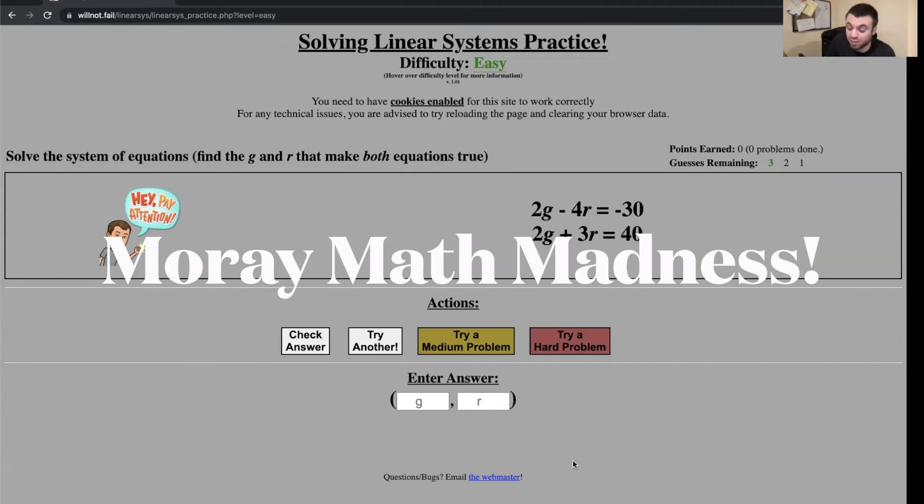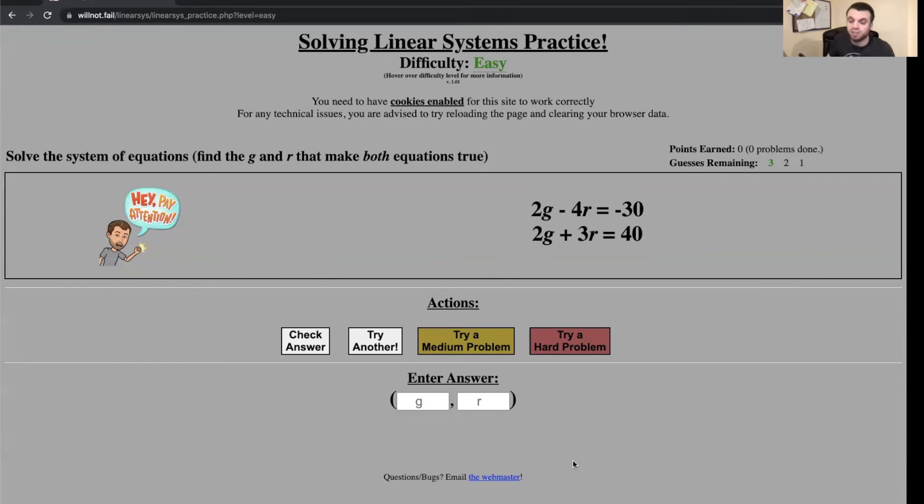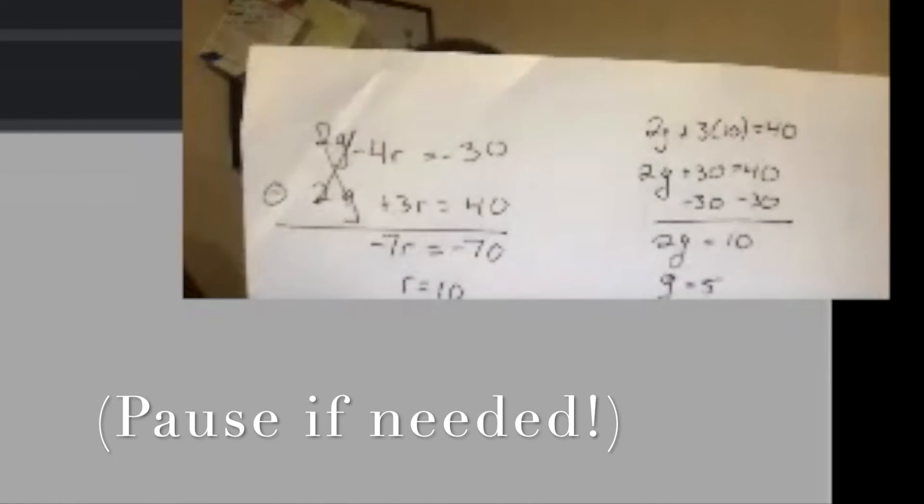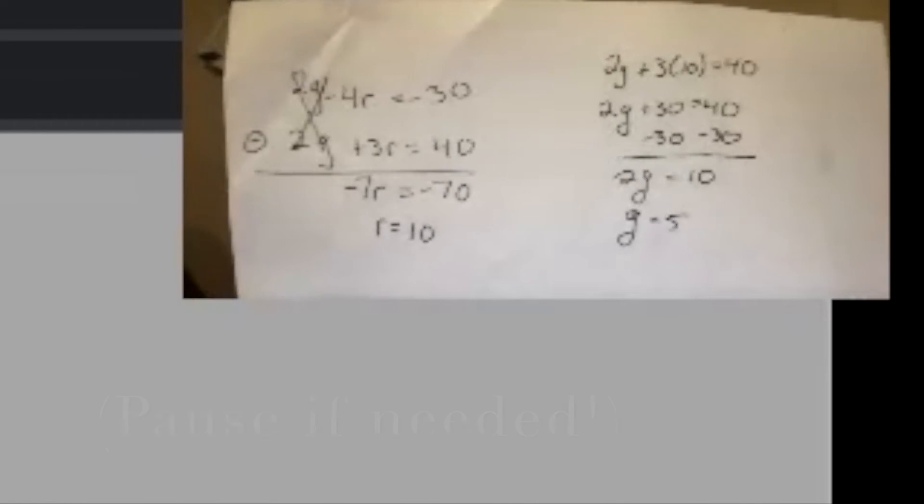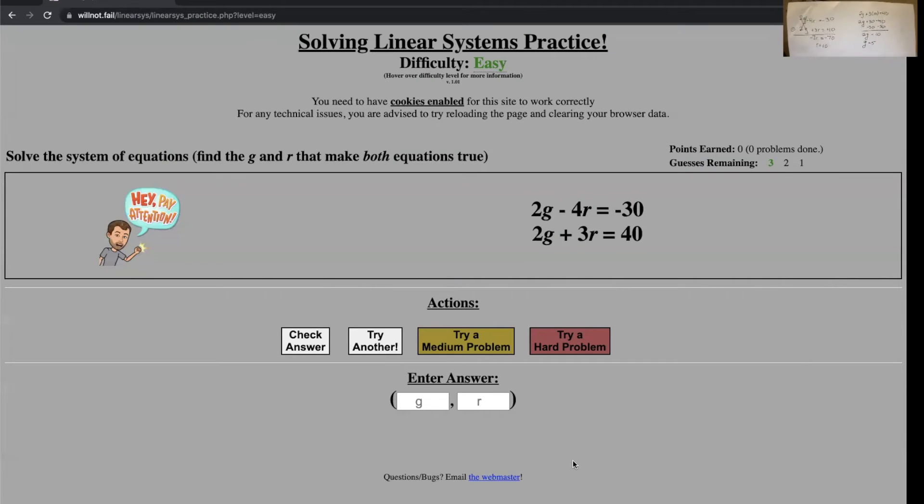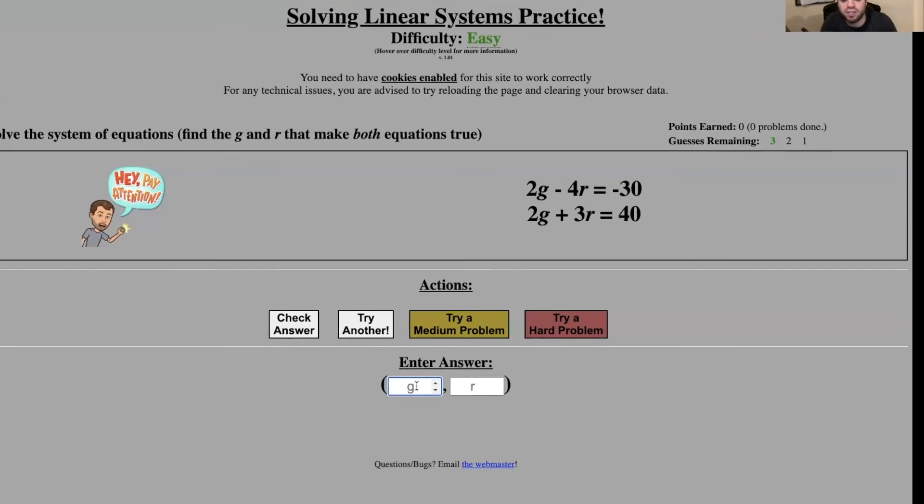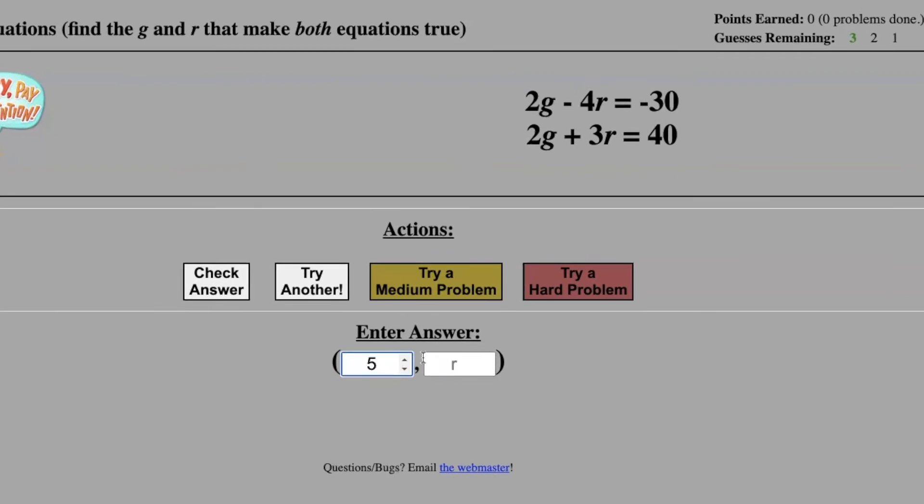Now I'm going to solve it on my paper. So g equals 5, I'm just going to hold up my work if you want to see it. You're going to solve the system using elimination, showing all my work. I've got g equals 5 and r equals 10.